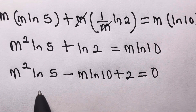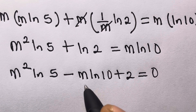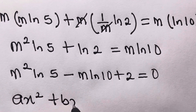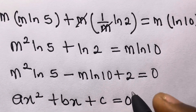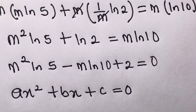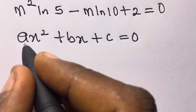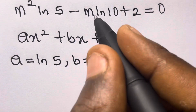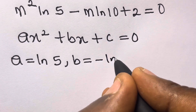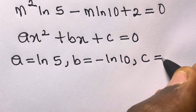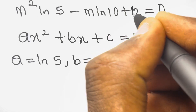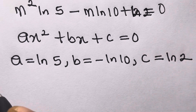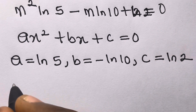Looking at this, we have a quadratic equation of the form ax² + bx + c = 0. We can declare that the coefficient of m² — that is a — is ln5, the coefficient of m — that is b — is minus ln10, and the constant c is ln2.